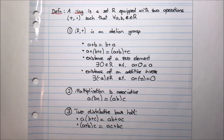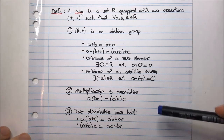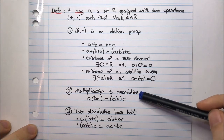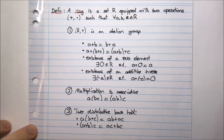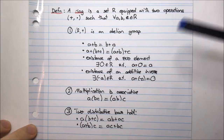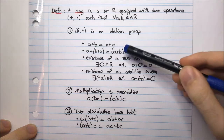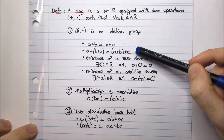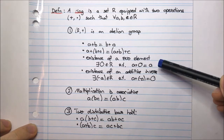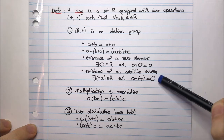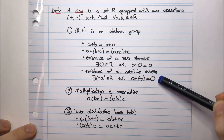For a general ring, there is only one condition on multiplication, namely that it's associative. But for addition we have more than associativity: we have commutativity, associativity, the existence of a zero element, and the existence of an additive inverse.